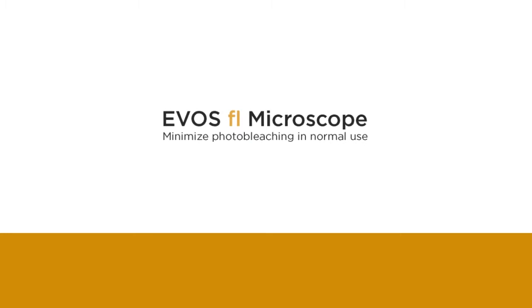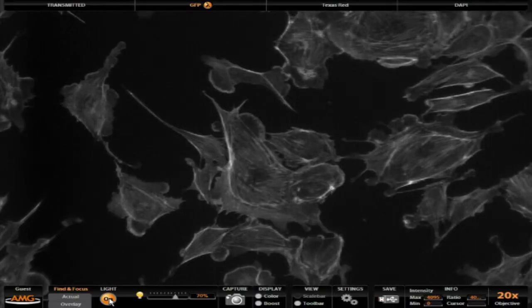Here's how EVOS FL minimizes photobleaching in normal use. When you turn on the light, the image is shown at 10 frames per second and the camera gain is turned up. This gives a slightly noisy image, but it allows you to scan the stage and focus on your cells of interest.